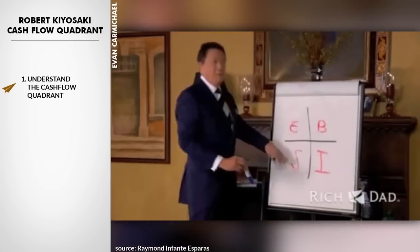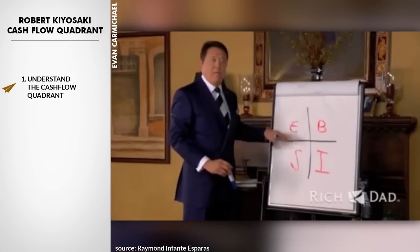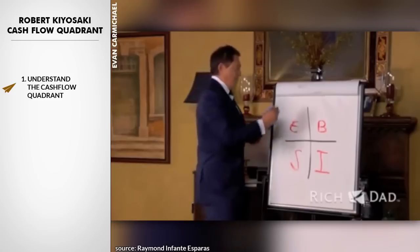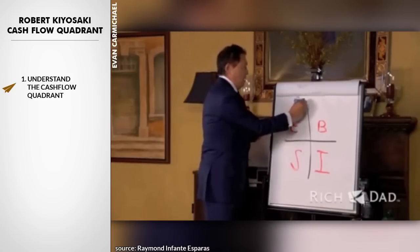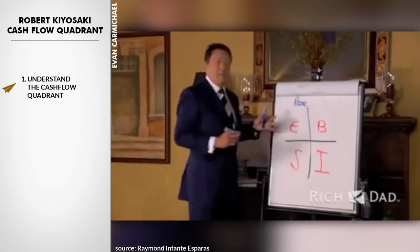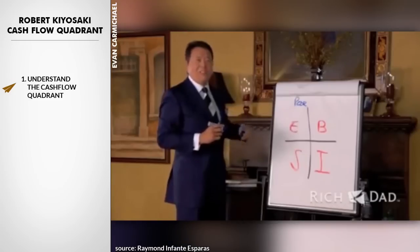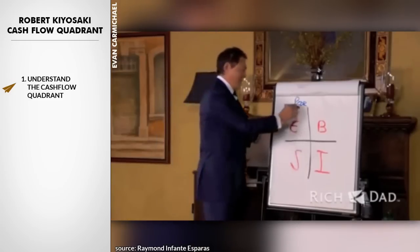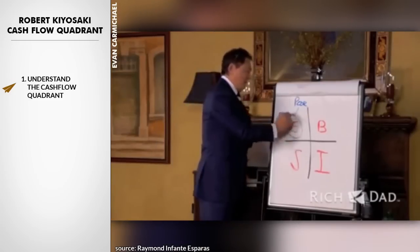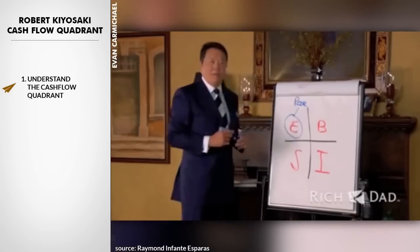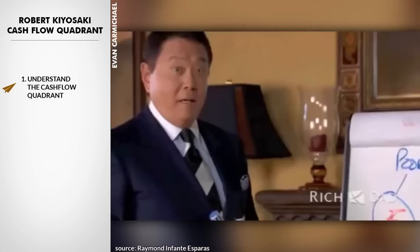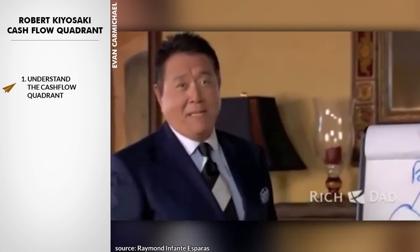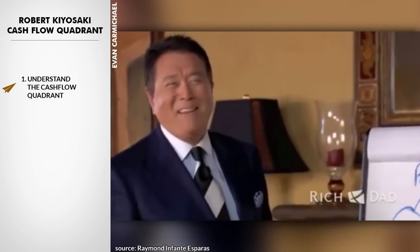Most people who go to school are programmed for the E and the S side. For example, it was my poor dad who always said to me, 'Son, go to school so you can get a nice, safe, secure job.' So my poor dad wanted me to be an employee — get a safe, secure job, steady paycheck and benefits.